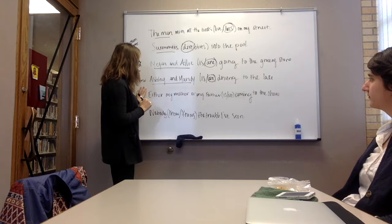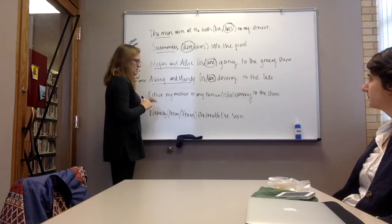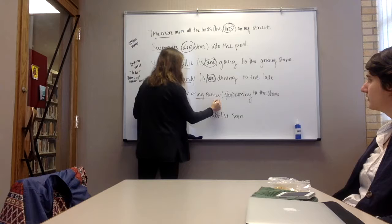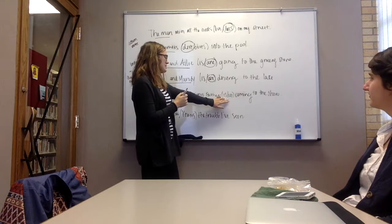And then, our other sentence here is, either my mother or my father is or are coming to the show. What is the subject? Mother or father. And the verb? Are. All right.